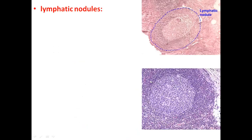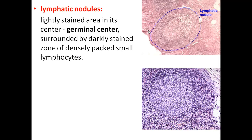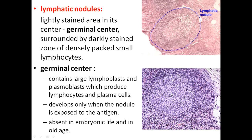When you look under the microscope, the lymphatic nodules will have peripheral darker lymphocytes and a pale central area. This pale central area is called the germinal center, where the maturation process of lymphocytes takes place. As lymphocytes mature, they come towards the periphery and are seen as dark lymphocytes. Germinal centers are the factory of production — they contain lymphoblasts and plasmoblasts, which produce lymphocytes and plasma cells moving towards the periphery.